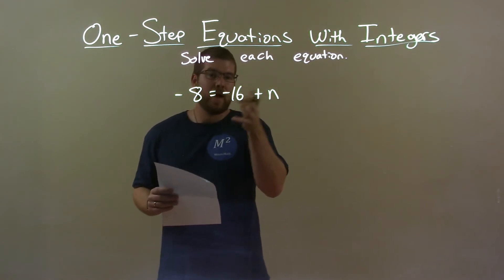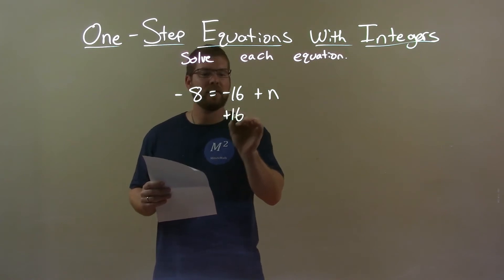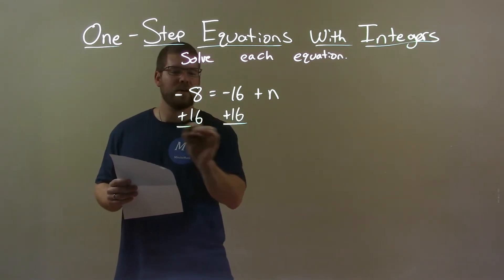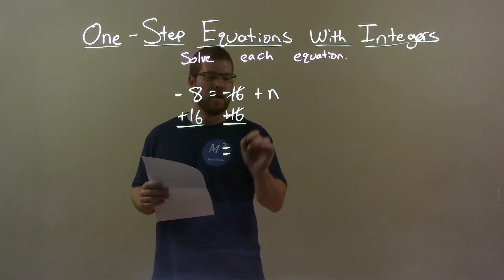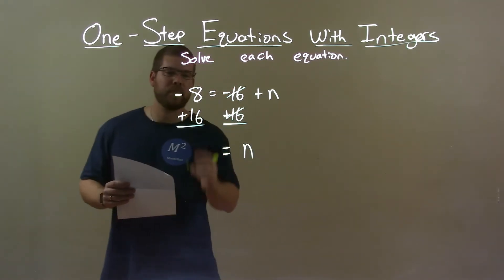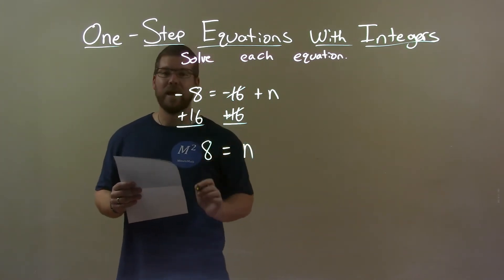The opposite of that negative 16, or adding a negative, is adding a positive 16. So if I add positive 16 to both sides, that will eliminate the negative 16 on the right. I got n by itself now on the right. Negative 8 plus 16 on the left comes out to a positive 8.